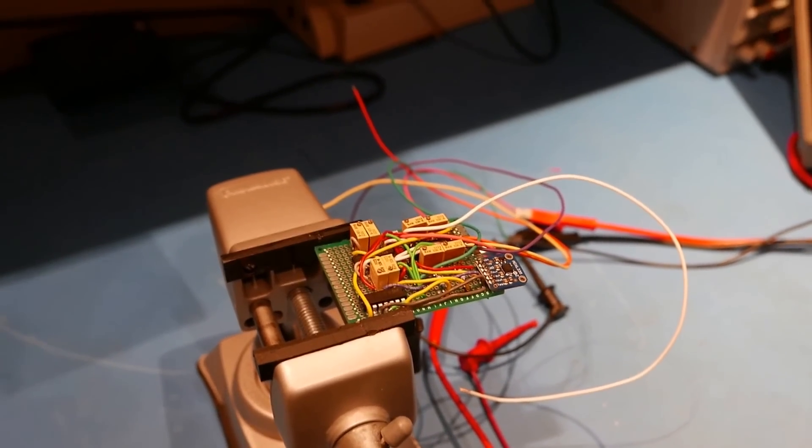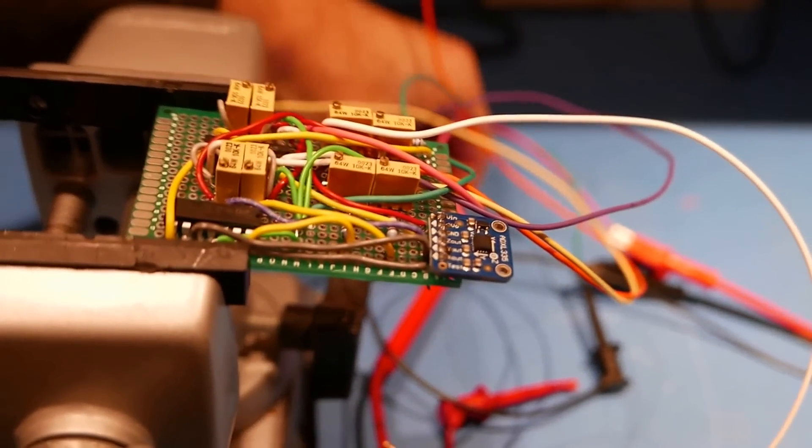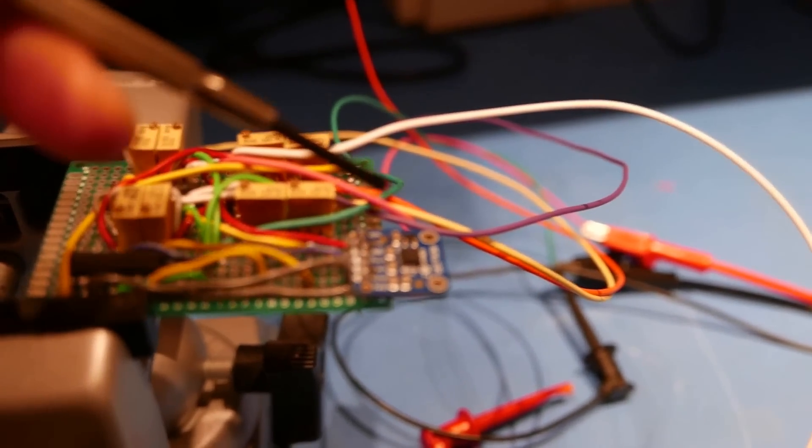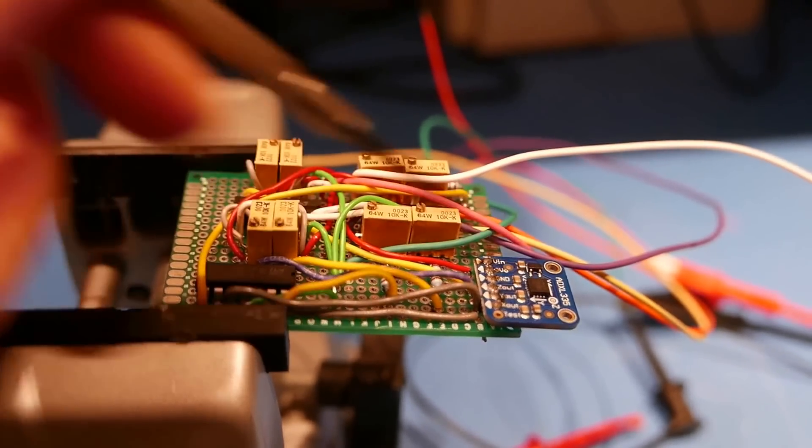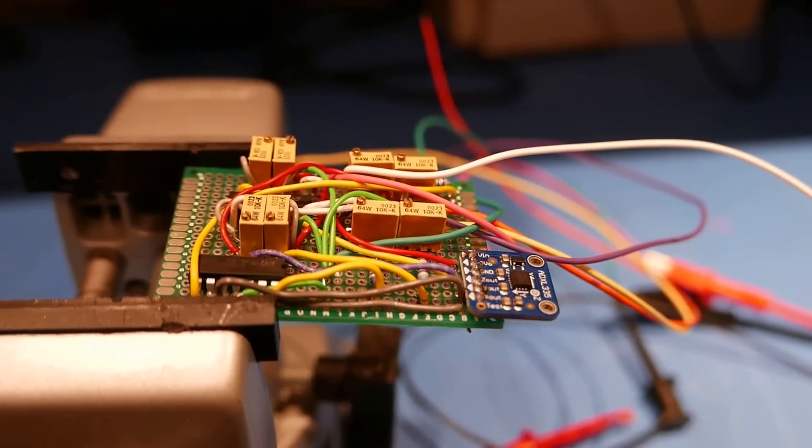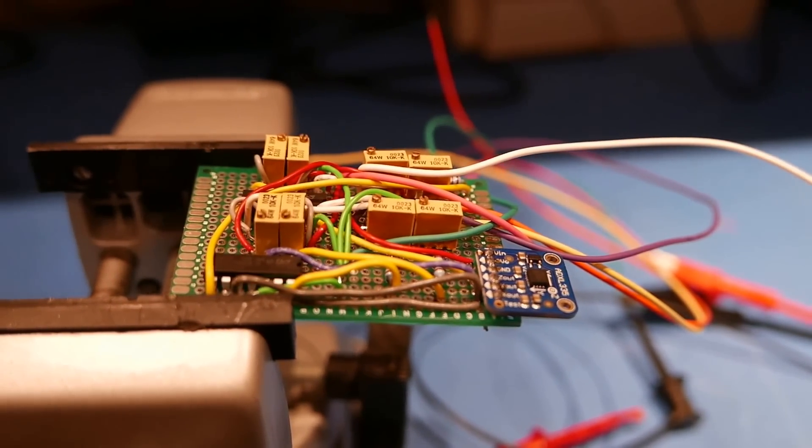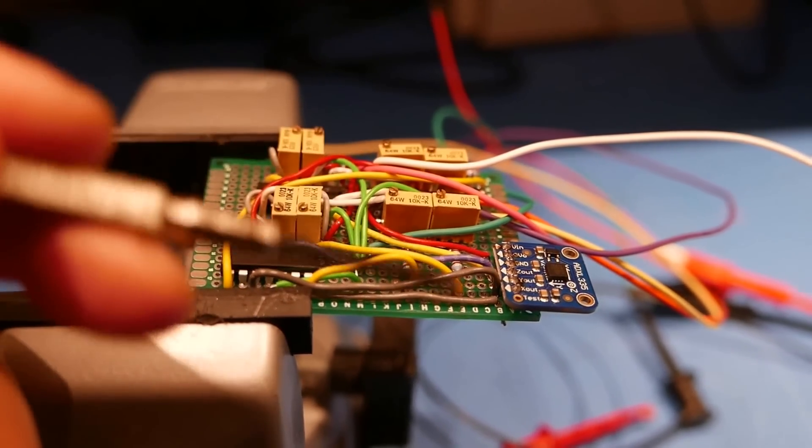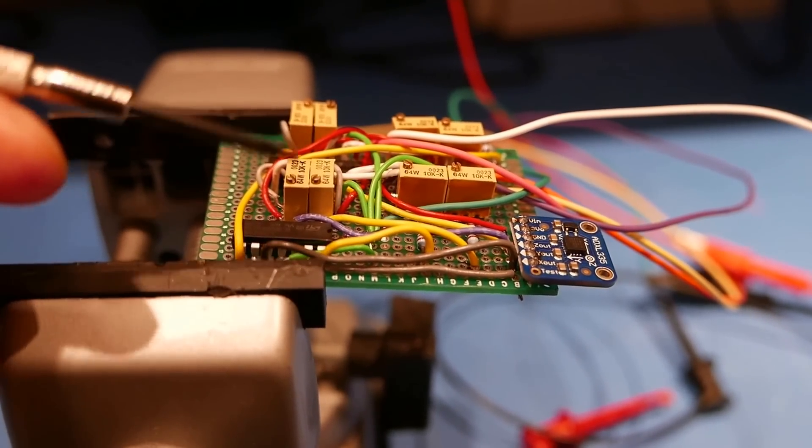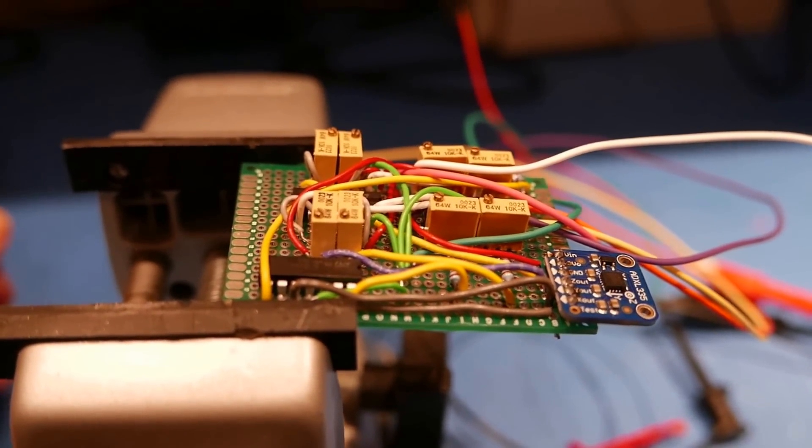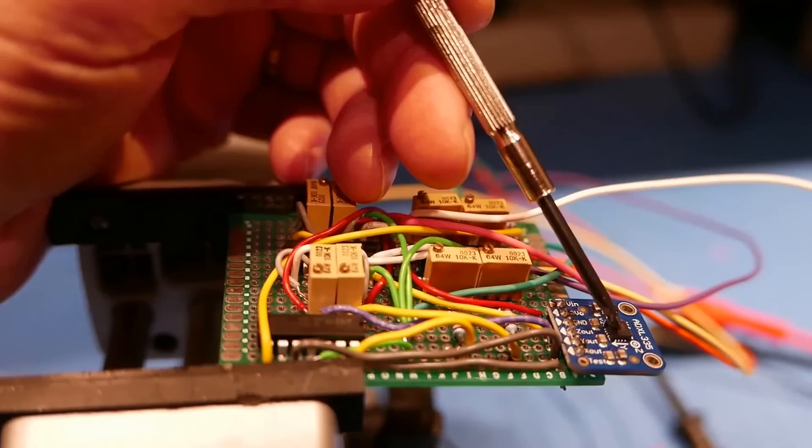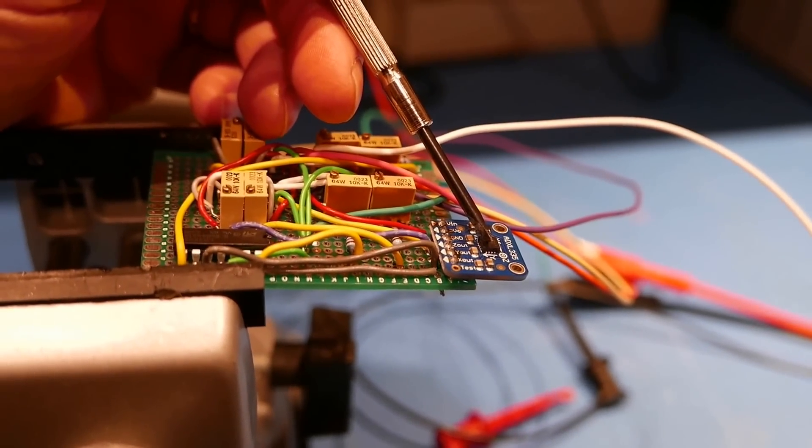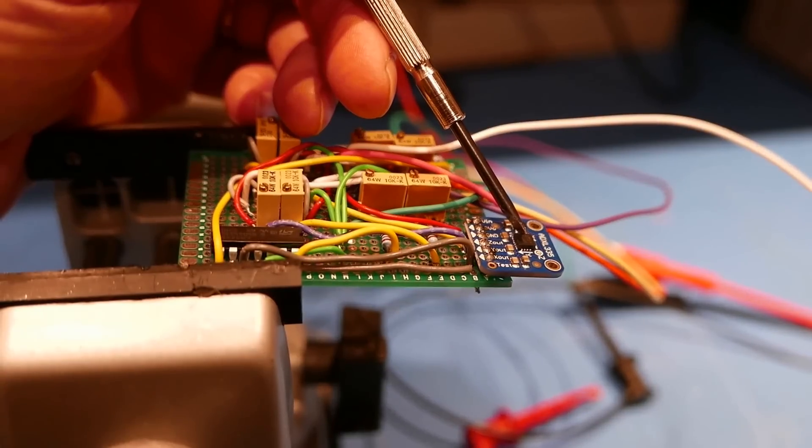Alright, so this is an accelerometer. Sorry for my voice, it's just getting over a bit of a Christmas cold. This little chip right there is the same chip you'd find in an iPhone, and it's all about having a three axis accelerometer measuring acceleration. What my board does here, this is my little handiwork, these things are designed to run on 3.3 volt power supplies.